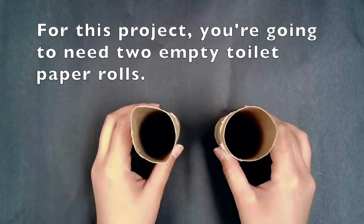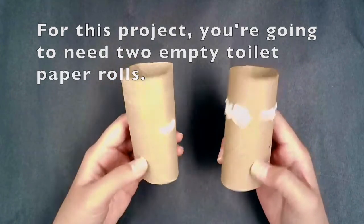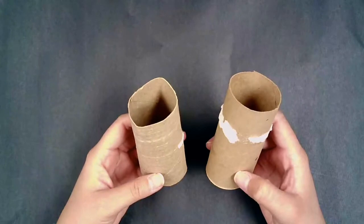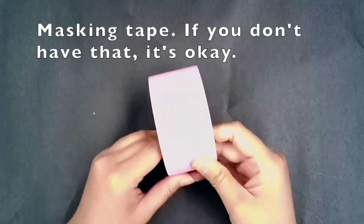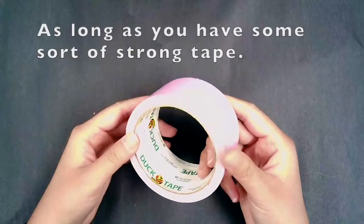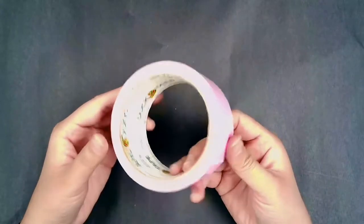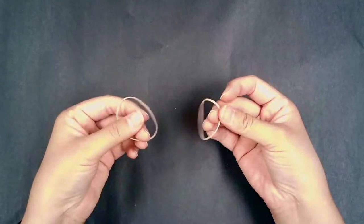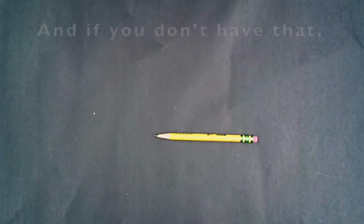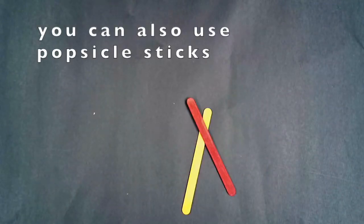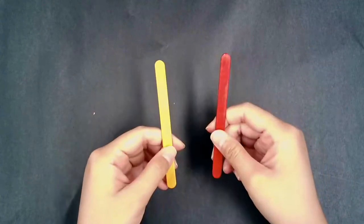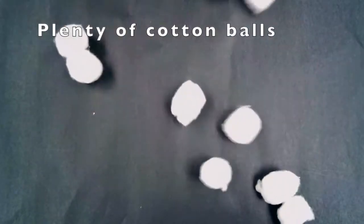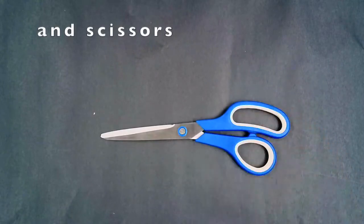For this project you're going to need two empty toilet paper rolls, masking tape, if you don't have that it's okay as long as you have some sort of strong tape, two rubber bands, a small pencil, and if you don't have that you can also use popsicle sticks, plenty of cotton balls, a hole puncher, and scissors.